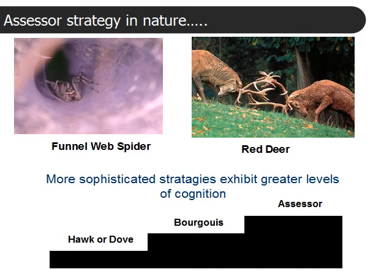Red deer go through what's known as a sequential series of assessments, starting first by braying at one another, then parading, and then doing pushing contests. All of those are assessment methods to find out who the larger, stronger animal is.